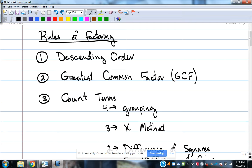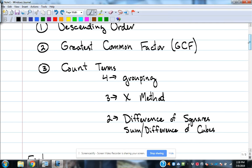The second thing you want to look for after you put the polynomial in descending order is look for a greatest common factor. Not every problem will have a greatest common factor, but it always makes it easier if you can find that and pull it out first. After you've done the greatest common factor, then we look at counting the number of terms in the polynomial.